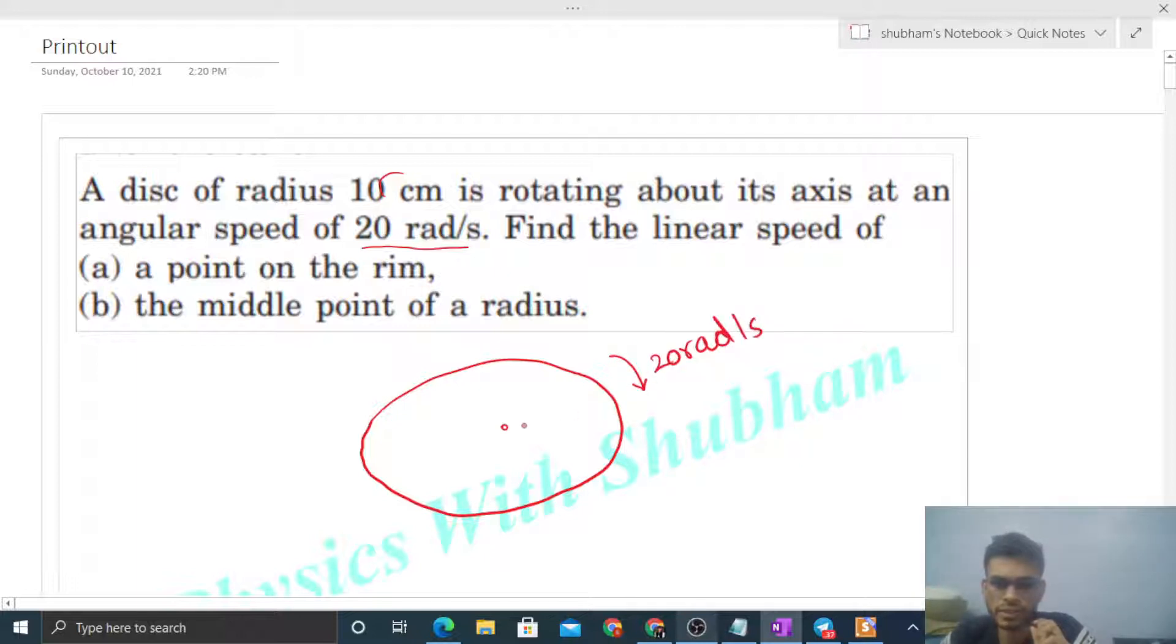So it is rotating about its axis with some angular speed that is given 20 radian per second and radius is also given that is 10 centimeter. If I take any point on this disk that is present on the rim, then how to find out the linear velocity of any point? That will be simply r into omega. r is the distance from the axis of rotation, that is perpendicular distance, and omega is the angular velocity.